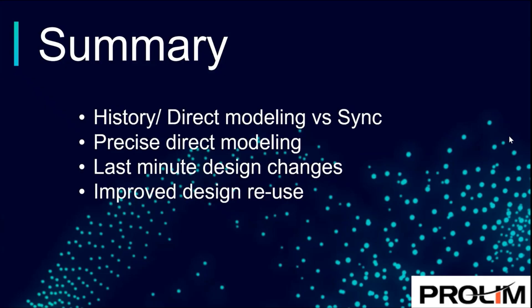In summary, we looked at the differences between history-based modeling versus direct modeling versus synchronous-based modeling, and how synchronous really leverages the good of all three while leaving out the not-so-great things. We saw how fast and flexible design changes can be — precise direct modeling and quick responses to last-minute design changes using design intent. When time really does count, at the very end of the design phase when you need to get a product out to manufacturing, you shouldn't have to rethink the entire design just to make one quick change. And we covered simultaneously editing multiple parts inside of an assembly and the ever-so-important improved design reuse — being able to reuse as much parts, data, and features as possible to make our job easier for the next iteration of the product.